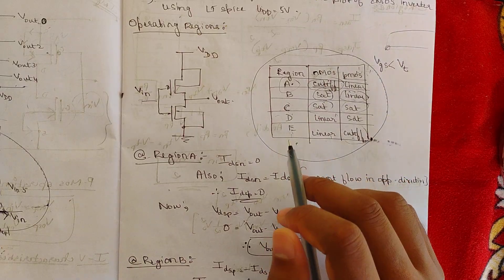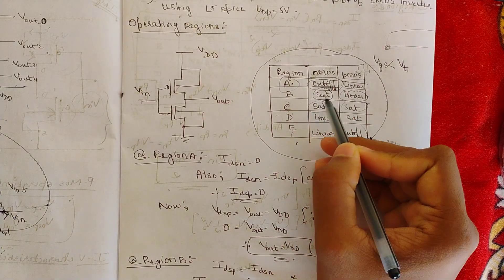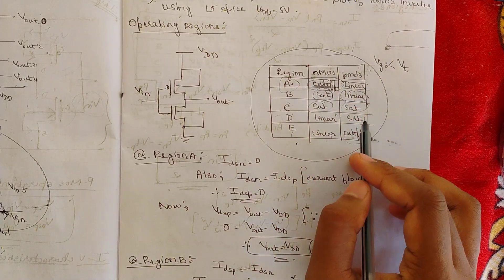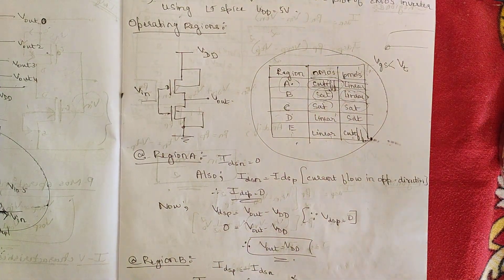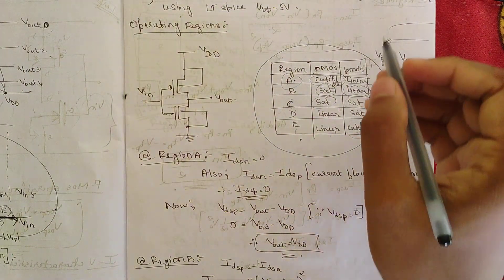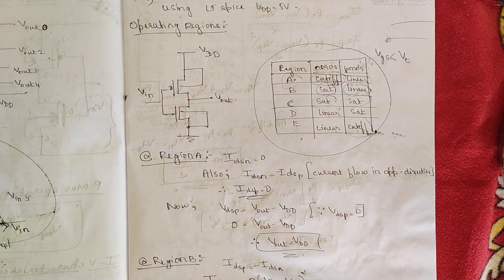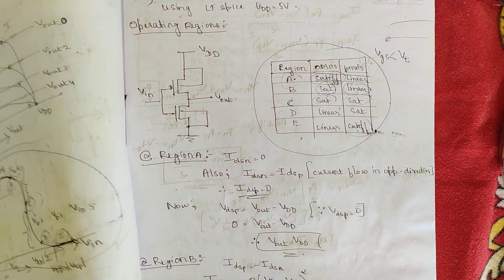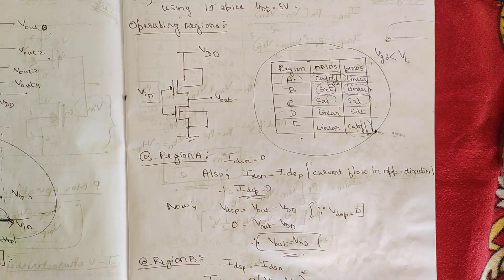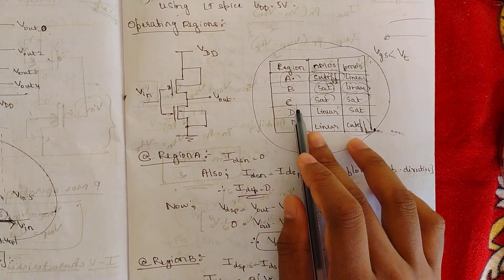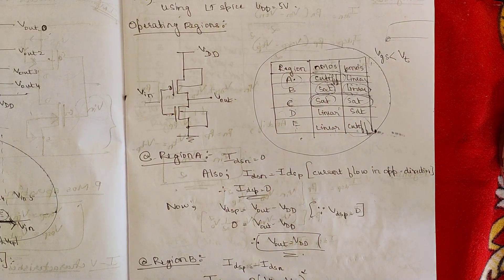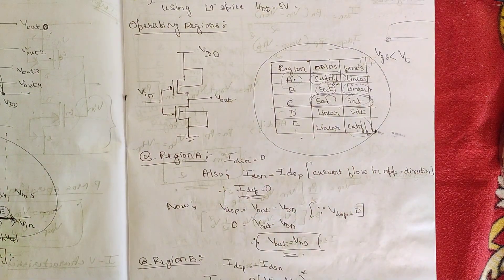Regions B and D are inversely opposite: in region B, NMOS is in saturation and PMOS is in linear region. In region D, NMOS is in linear region and PMOS is in saturation region. In region C, both NMOS and PMOS are simultaneously in saturation — this is the critical transition region of the inverter.